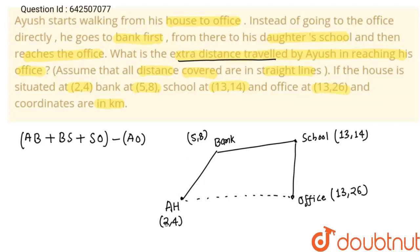Finding distance AB: 5 minus 2 is 3, and 8 minus 4 is 4, so √(3² + 4²) = √(9+16) = √25 = 5. So AB = 5 km. Now from bank to school: x₂ − x₁ = 13 − 5 = 8, and 14 − 8 = 6, so √(64 + 36) = √100 = 10. So BS = 10 km.